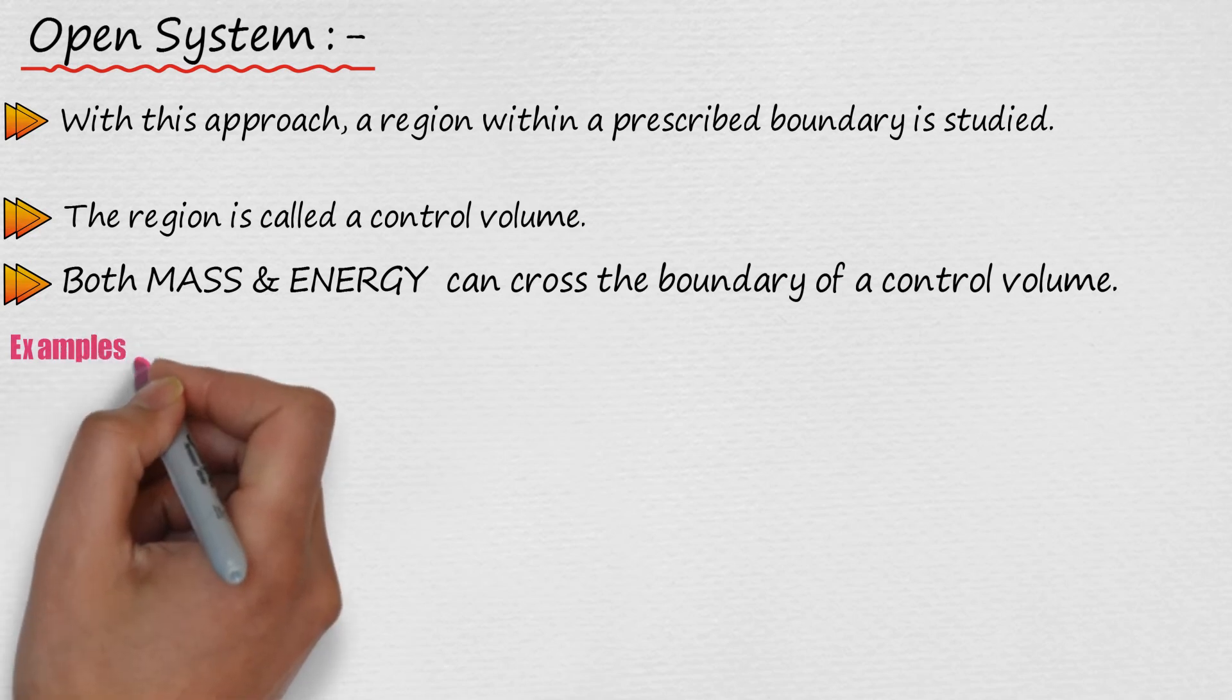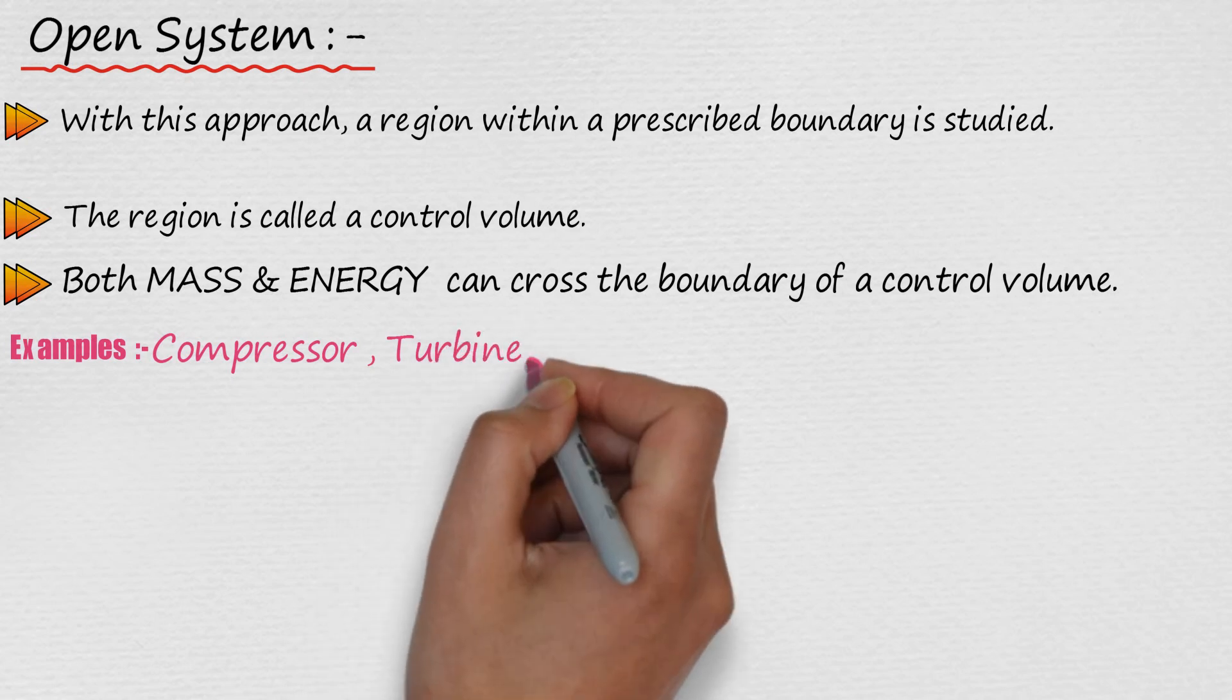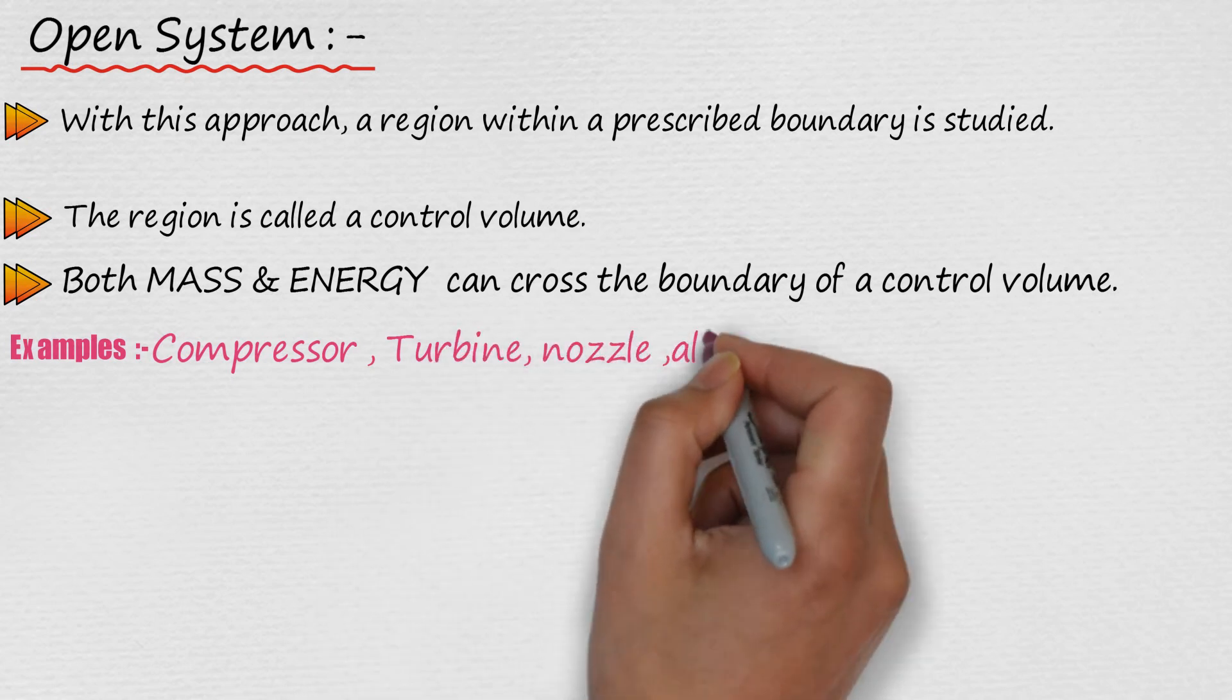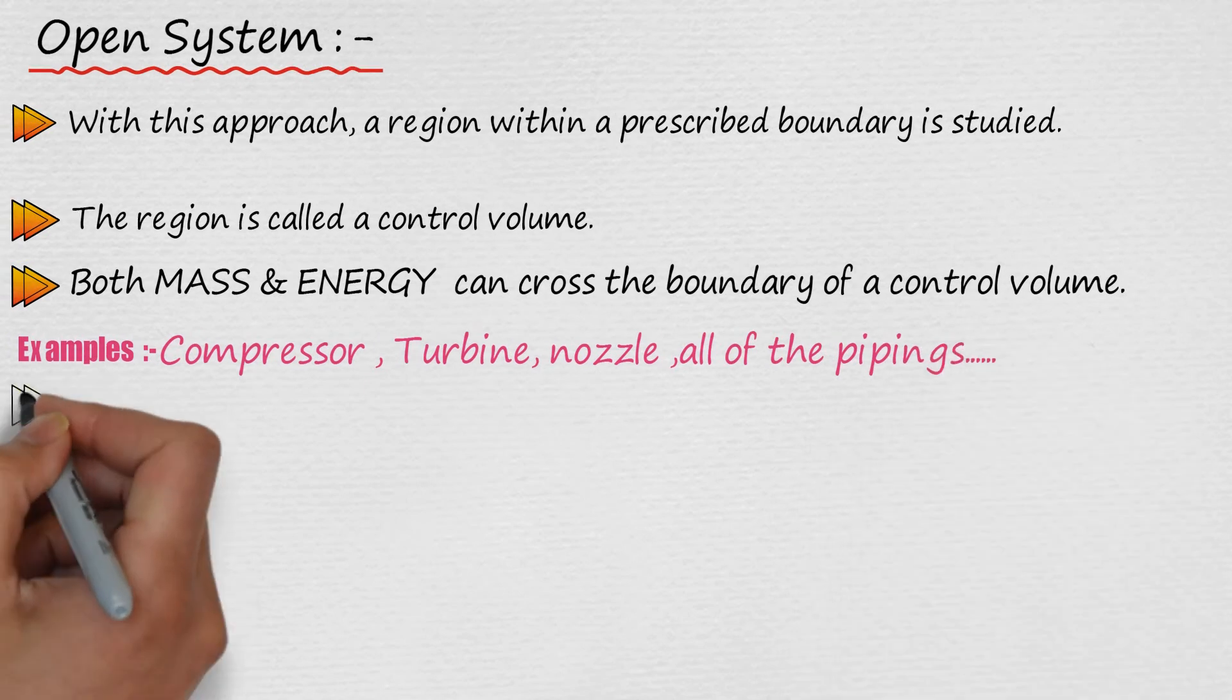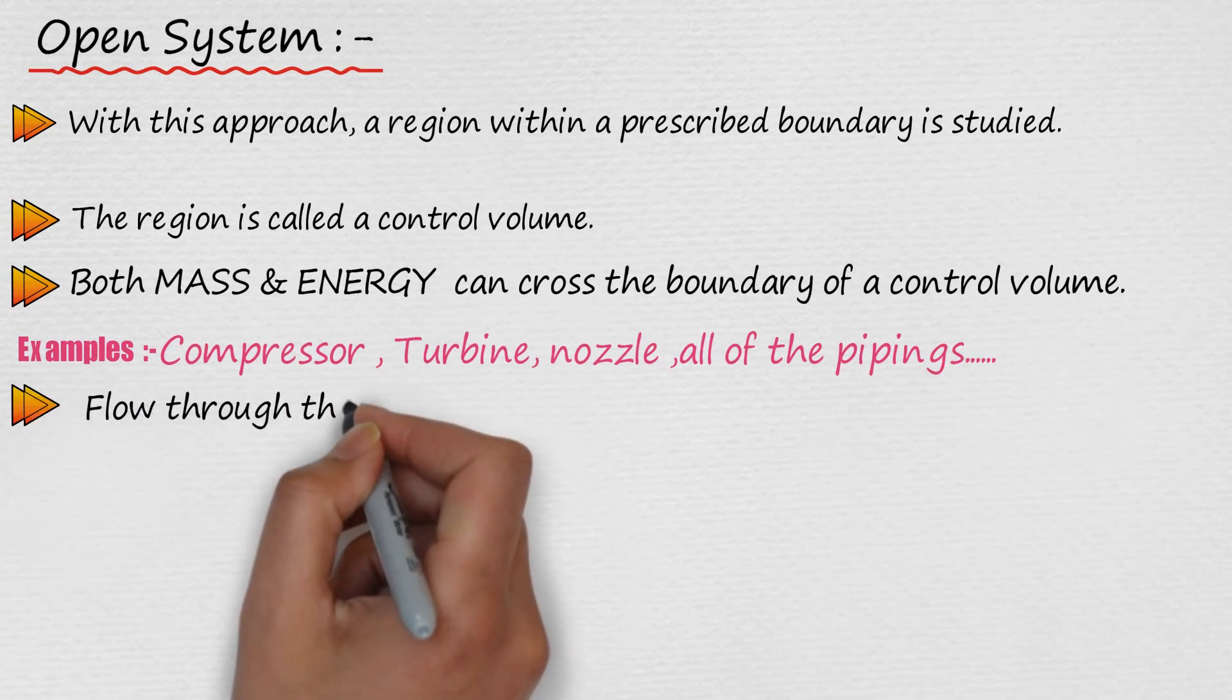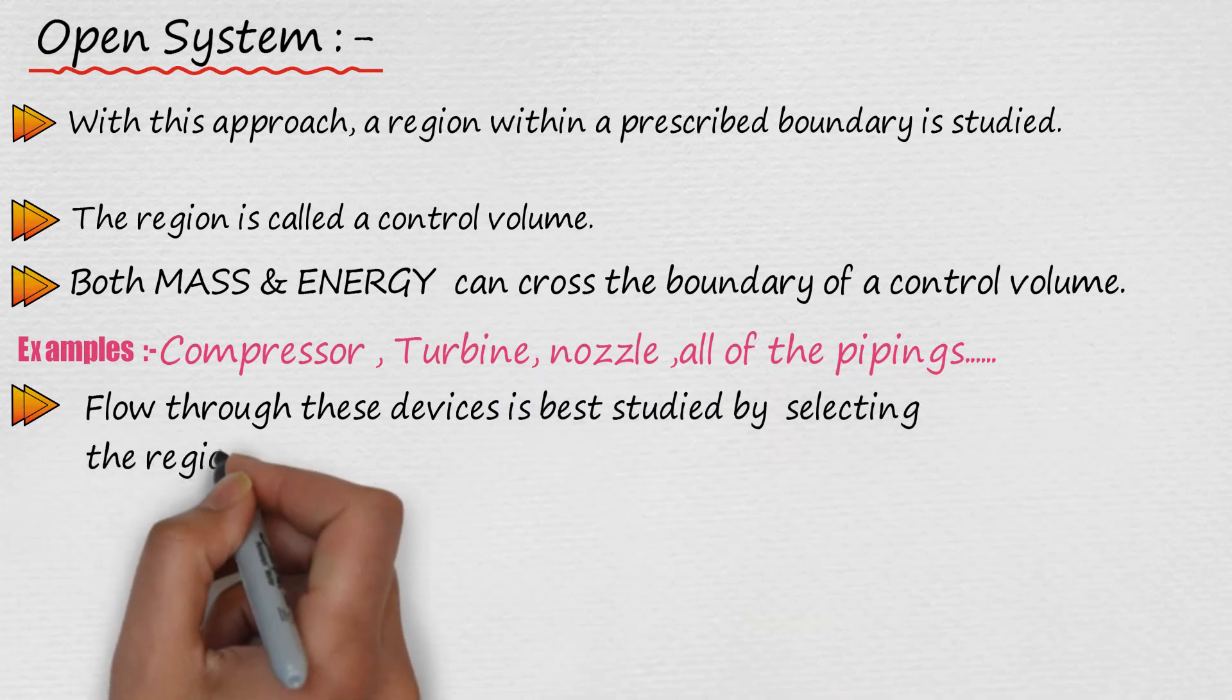Example of open systems are compressors, turbines, nozzles and all the pipings. Flow through these devices is best studied by selecting the region within the device as the control volume.